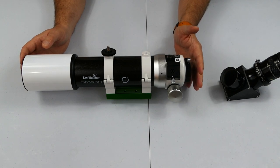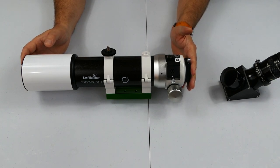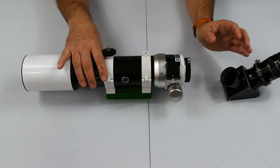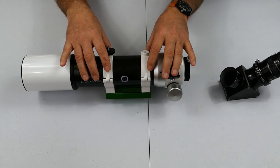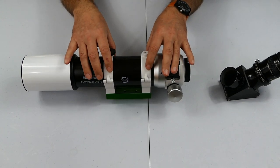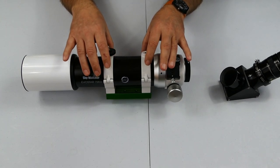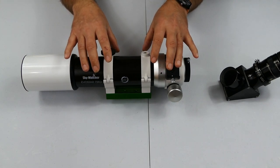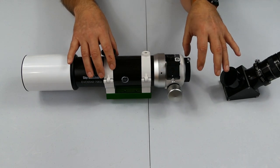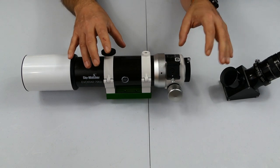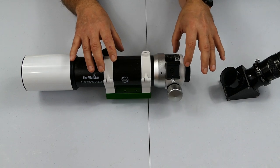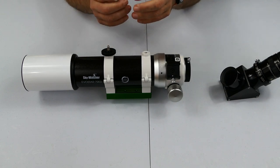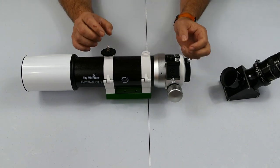As far as weight goes, I think the one thing you need to be mindful of is the fact that with just the eyepiece and the diagonal on and the dovetail all the way back as it is now, I was right at the end of the dovetail plate on my mount. So I think if you're using this for one shot color such as a Canon or such like, it's probably going to be fine.